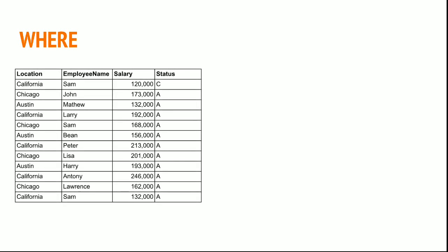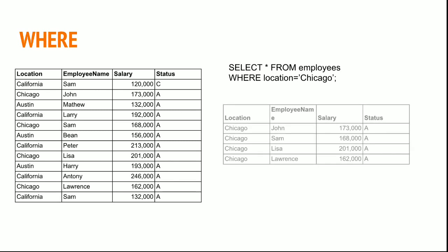I can use this WHERE predicate to filter data. If I have the full data with all the employees across all locations inside a table, and I want to fetch only the data related to employees located in Chicago, my statement goes like this: SELECT * FROM employees WHERE location = 'Chicago'. The data will show only Chicago-based records.